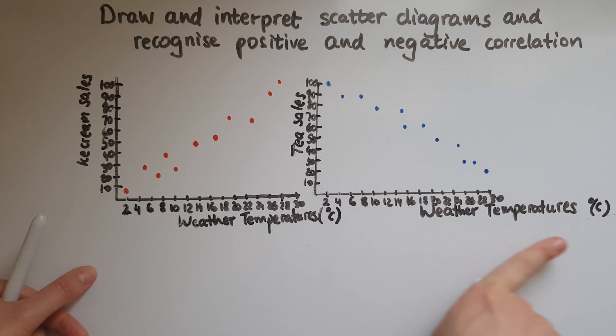Whereas here we've got an increase and a decrease. So that means this is a negative correlation between weather temperature and tea sales.